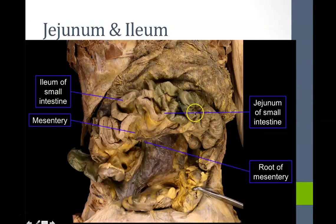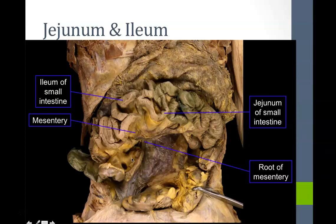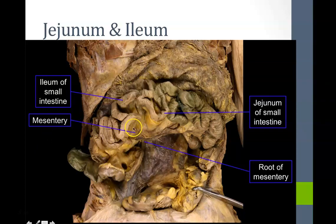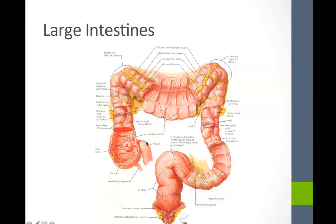In an overall view of the intestines, the jejunum is in the left upper quadrant, and the ileum travels down and is most likely to be found in the right lower quadrant, right before it enters the large intestines at the cecum. We can also see some mesentery here and the root of the mesentery.